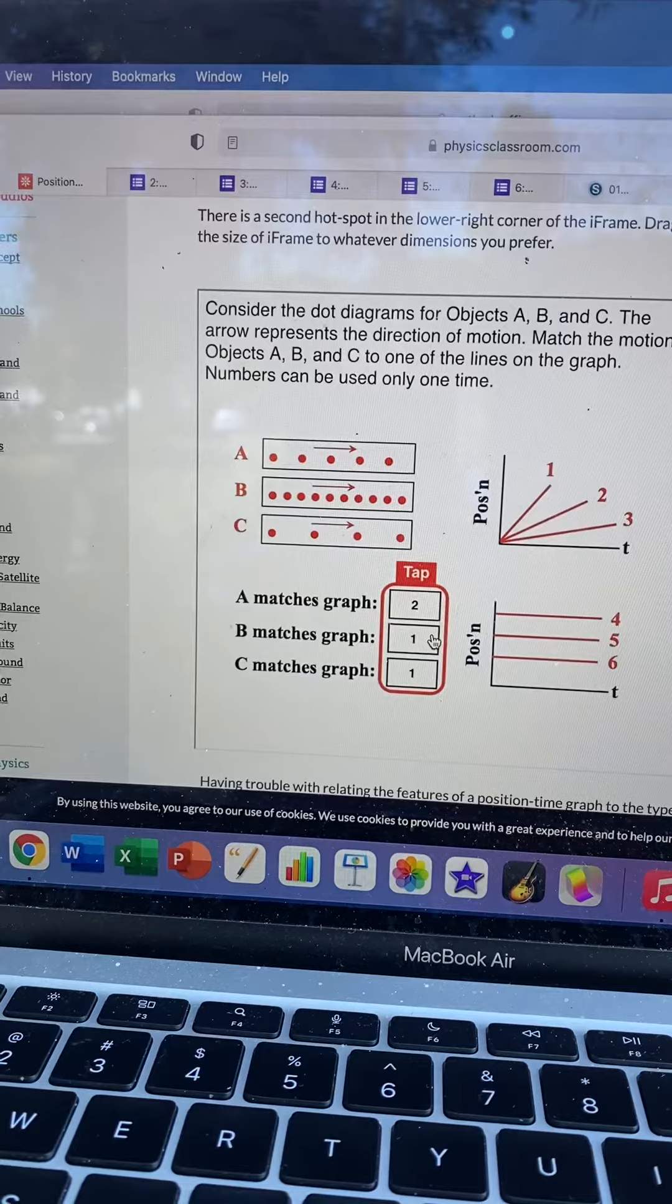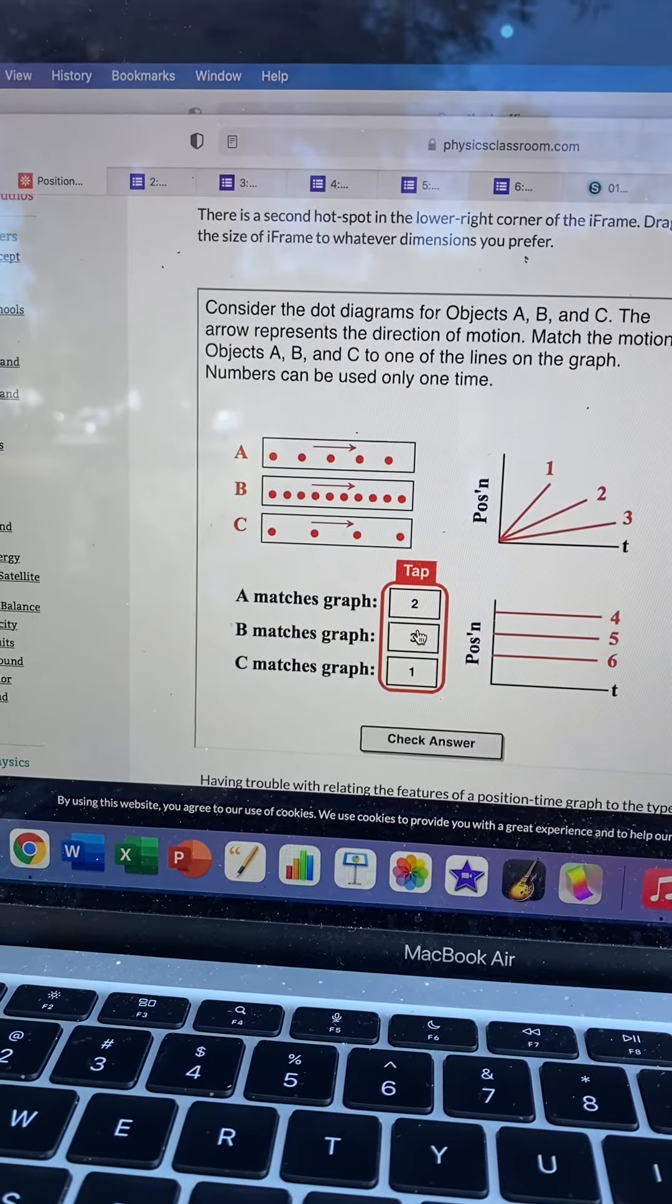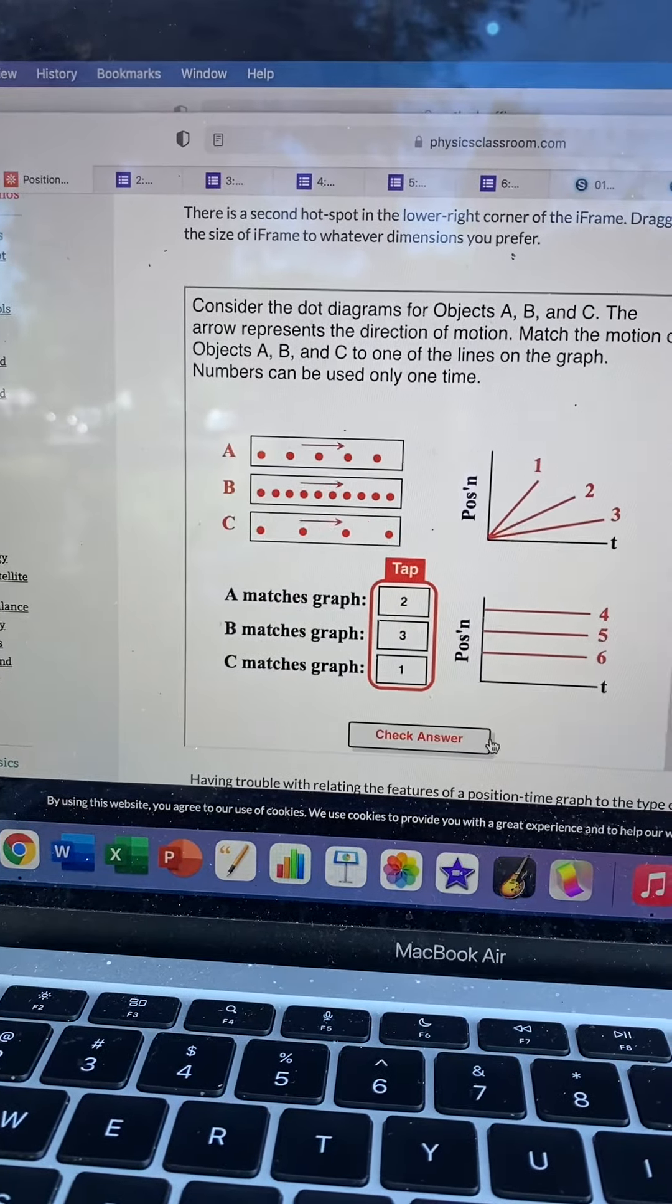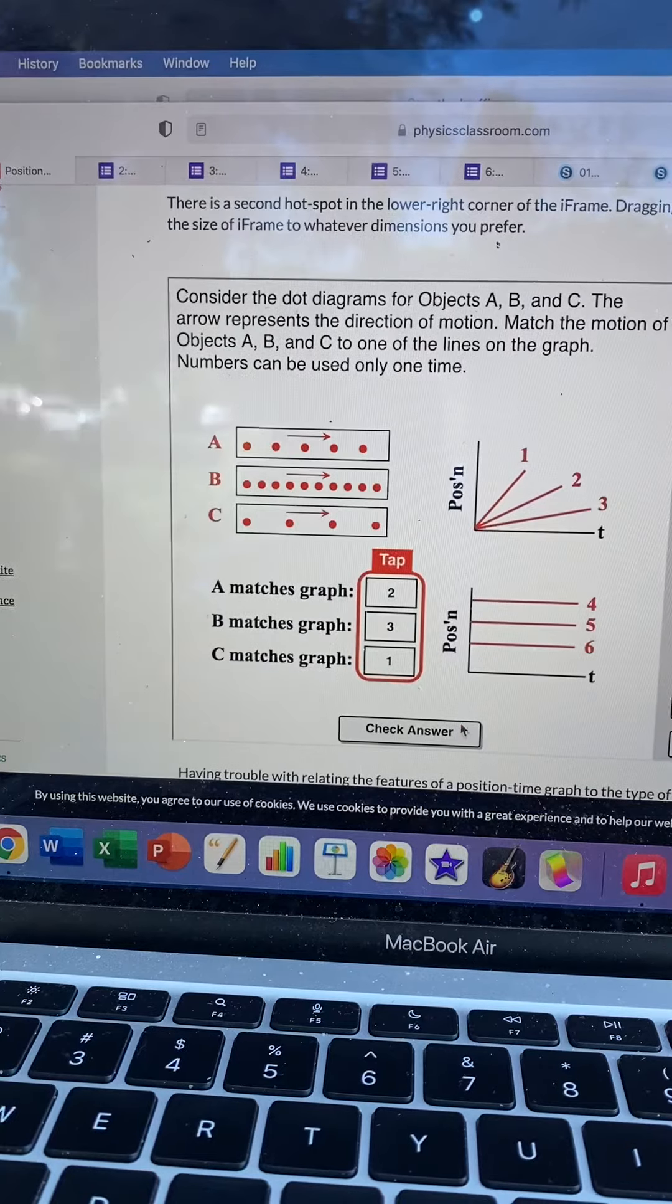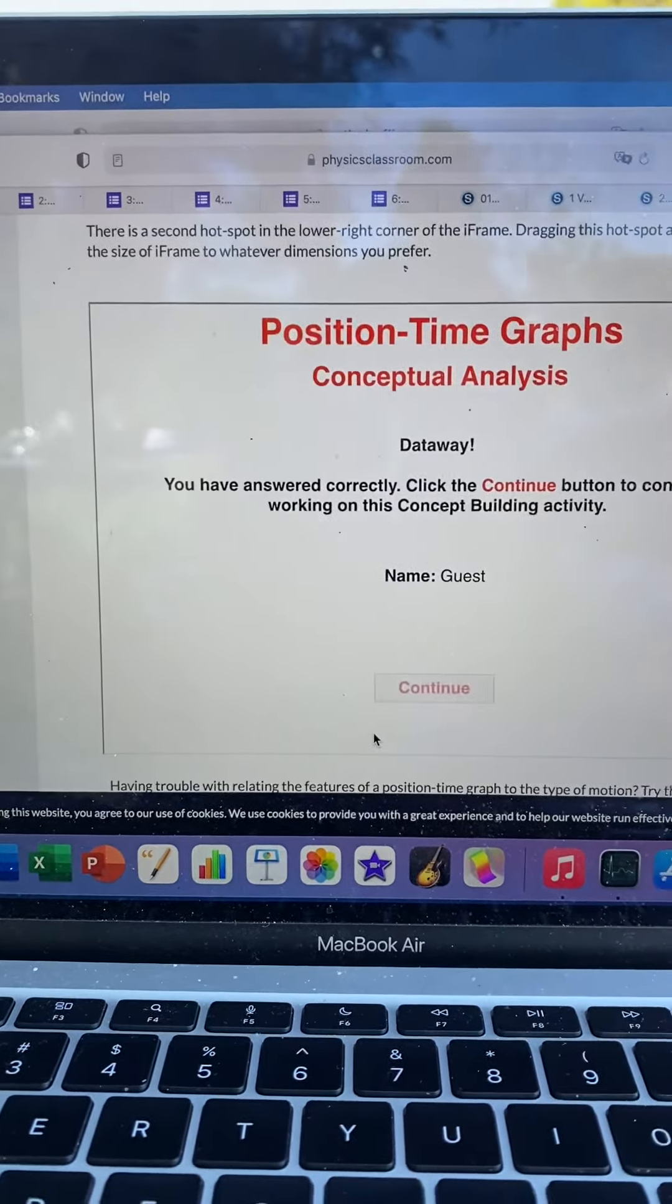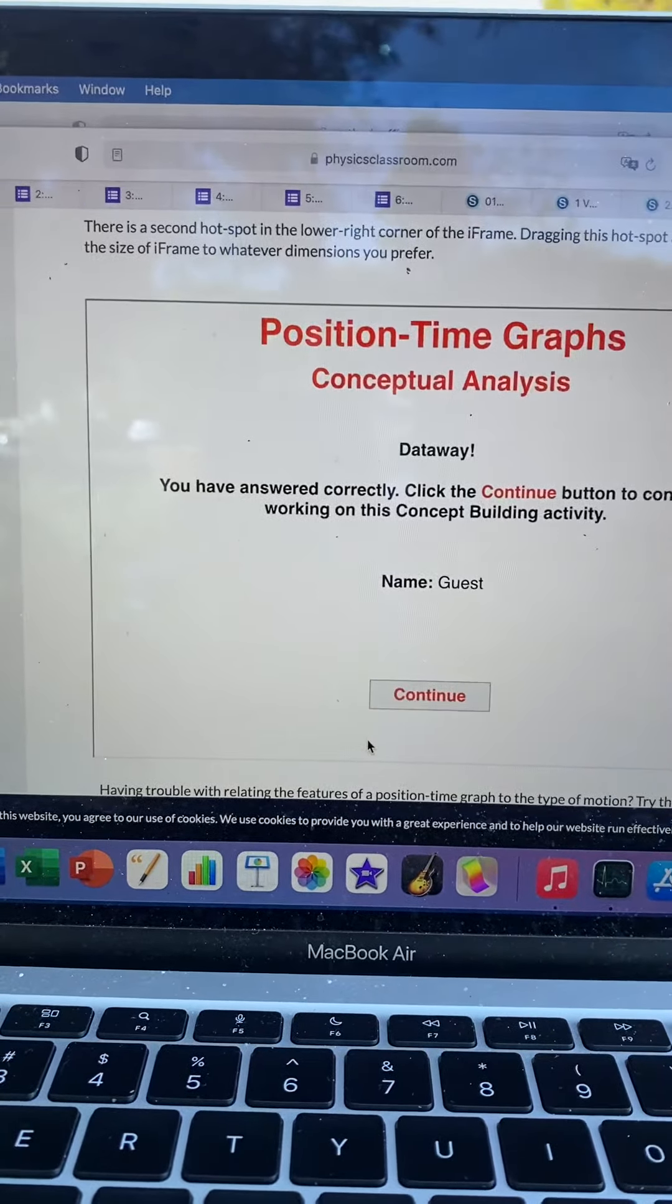So B would be the slowest one, and that would be three, and then you can check your answer. If you get stuck, click on help me. Check your answer, and it'll say that way. And that's it. Make sure you put those in your notes, right? Draw the ones that match in your notes, label them, and you're going to do four of those.